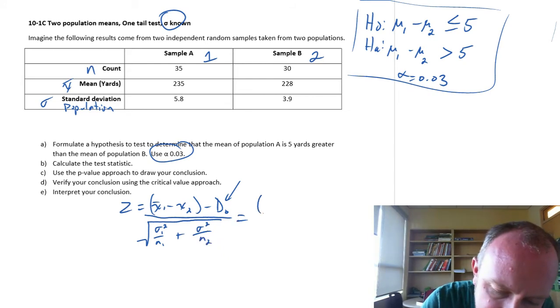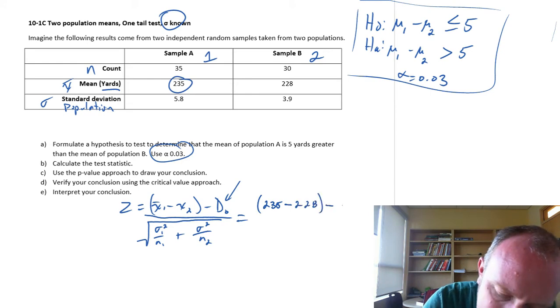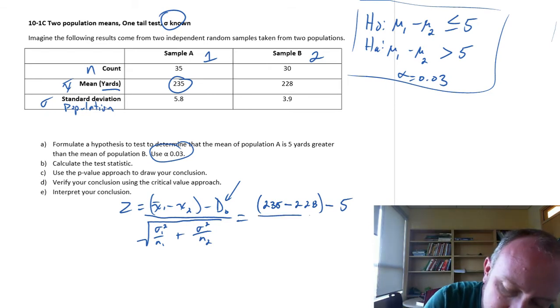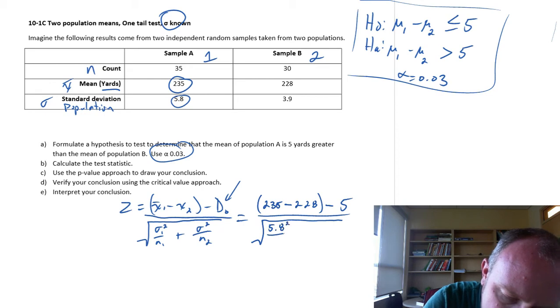So let's enter in our values. My mean of sample A, this is 235 yards, minus sample B, 228, minus now that hypothesized difference is 5, divided by the standard error here. I've got 5.8 squared divided by 35, and 3.9 squared divided by 30.